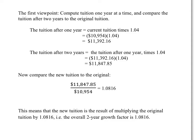Let's look at the first viewpoint. We compute tuition one year at a time and compare the tuition after two years to the original tuition. The tuition after one year of growth is current tuition times 1.04. So that's $10,954 times the growth factor, 1.04, and that is $11,392.16.